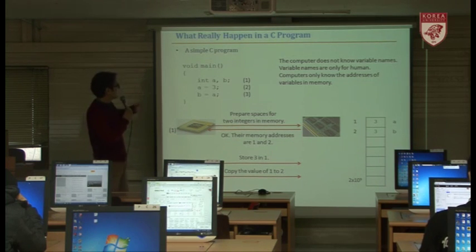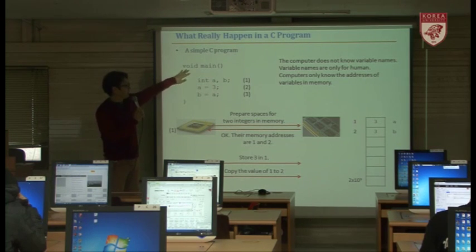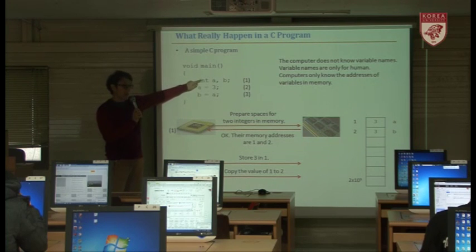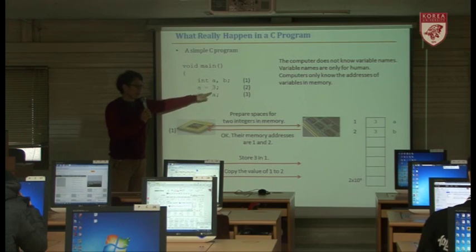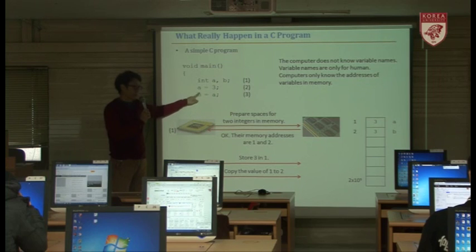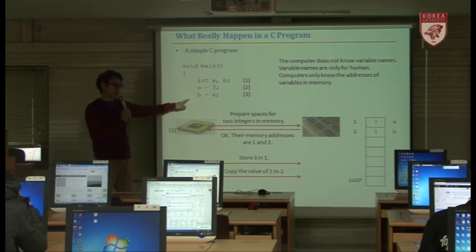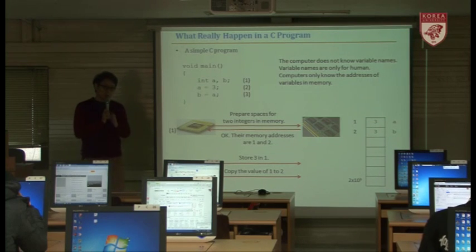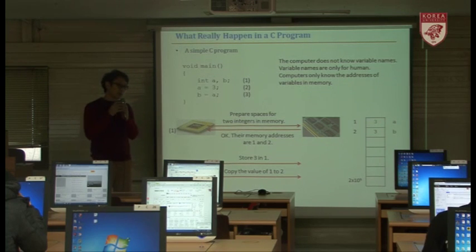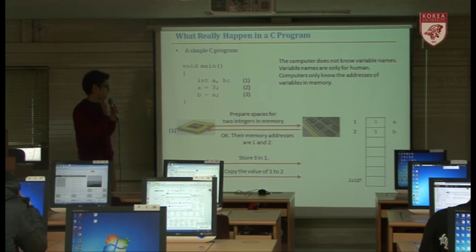Let's think about what really happens in a C program. Here is a simple C program with a void main function. It declares two variables, A and B, then assigns A equals 3. Then B's value is 3 and A's value is 3. We just declare variables, assign values — that's it.